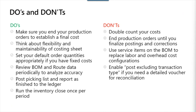Some don'ts: don't double count your costs — make sure all labor cost components in routes and overheads aren't duplicated, for example don't include employee benefits in both a blended rate cost category and an overhead. Don't end your production orders until you've finalized postings and corrections — have a review process in place, because once you've ended a production order it cannot be undone. Don't use service items on the BOM or formula to replace labor and overhead cost configurations, as this doesn't give you the flexibility needed for indirect costs and general ledger reconciliation. And don't enable 'post excluding transaction type' if you need a detailed voucher for reconciliation.